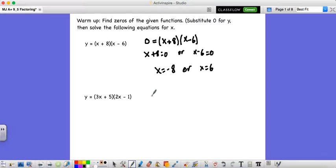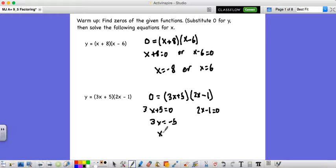Same game down here, we'll just set zero equals all the pieces on the right. So zero equals three x plus five times two x minus one. Now from here, we do the exact same thing. So we split it up. Three x plus five equals zero, or two x minus one equals zero. Solve this for x. So three x equals negative five, x is negative five over three. On the right, we'll have two x equals one. So x is just one half.